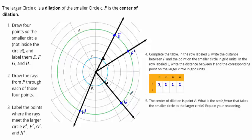And we're going to do the same thing for the larger circle — from the center to the larger circle. For E prime: six spaces. F prime: six spaces. G prime: six spaces. And H prime: six spaces.